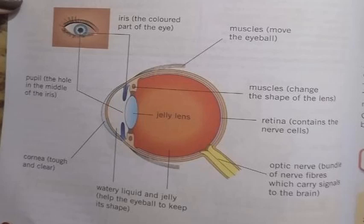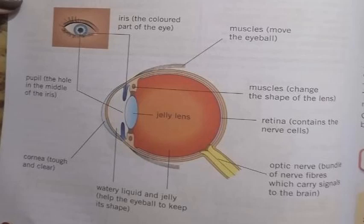The parts of the eye are: the iris, which is the colored part of the eye; the pupil, which is the hole in the middle of the eye; and the cornea, a clear layer that protects our eye. There are also eye muscles attached to the skull, water liquid and jelly that help the eyeball keep its shape, the retina where images are created and which contains nerve cells, and the optic nerve which contains a bundle of nerve fibers that carry signals to the brain.